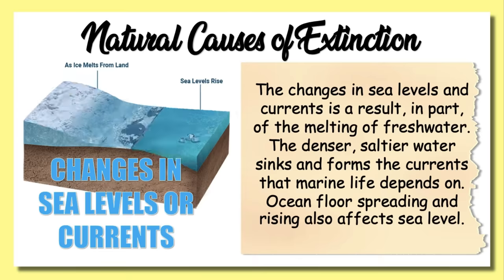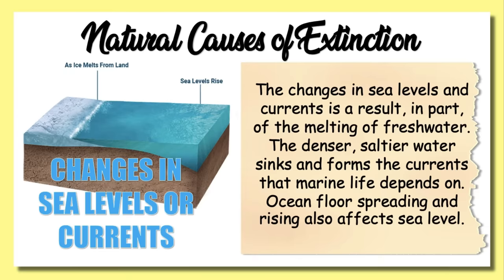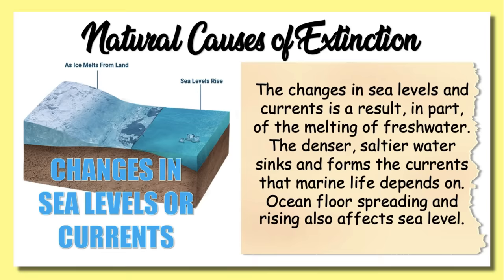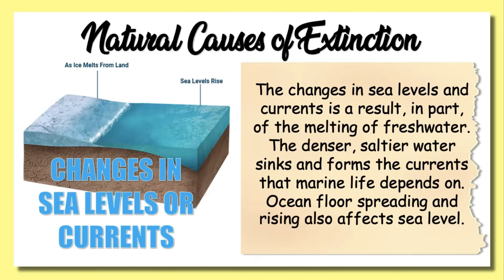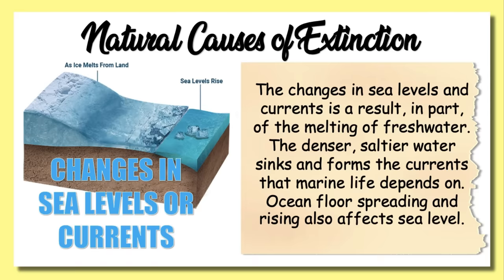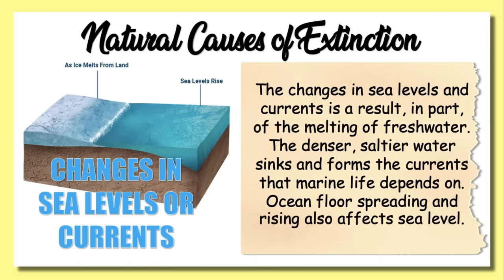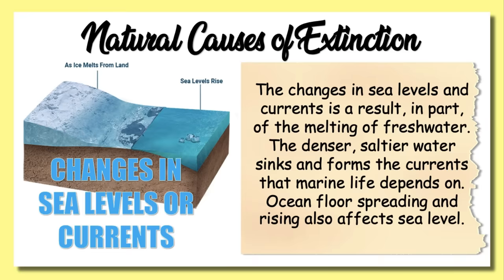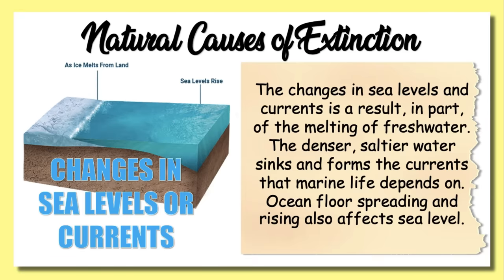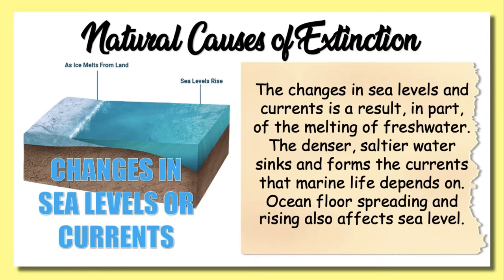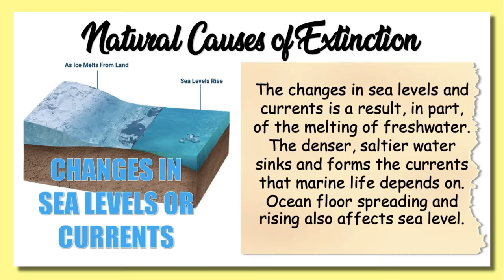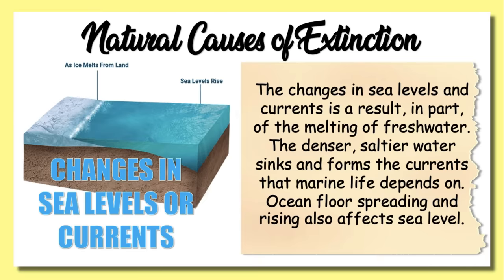Next, changes in sea levels or currents. Changes in sea levels and currents result in part from the melting of freshwater ice. The denser, saltier water sinks and forms the currents that marine life depends on. Ocean floor spreading and rising also affects sea level — a small rise in the ocean floor can displace a lot of water onto already occupied land. Gases from volcanic activity can also be absorbed by the water, changing its chemical composition and making it unsuitable for some life.